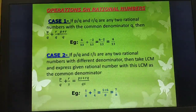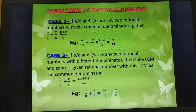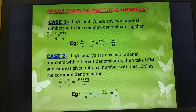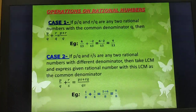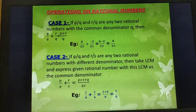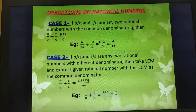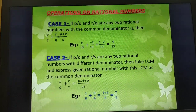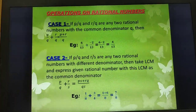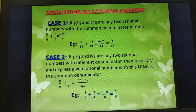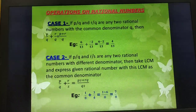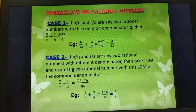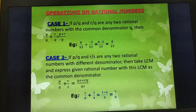Operations on rational numbers. Case 1: If P/Q and R/Q are any two rational numbers with a common denominator Q, then P/Q + R/Q = (P + R)/Q. For example, 6/13 + (-2/13) = (6 - 2)/13 = 4/13.